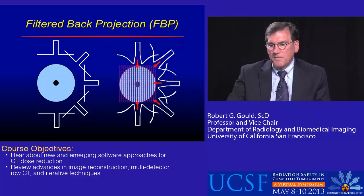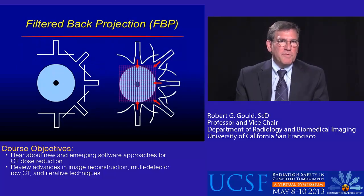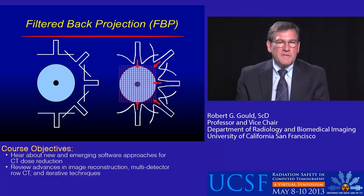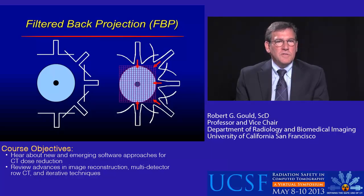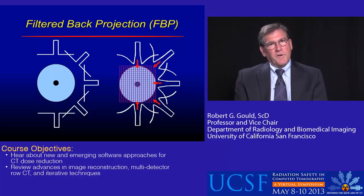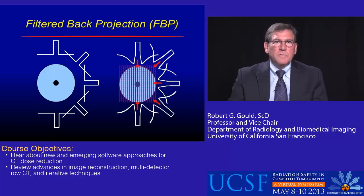So here's an example of filtered back projection. You take those projections and multiply by the kernel, which creates an overshoot to eliminate streaks. It is very fast and easy to do.